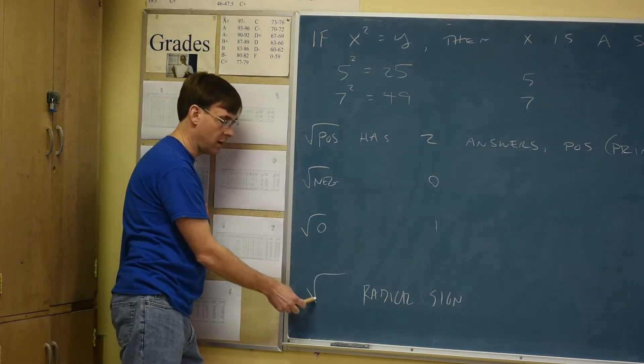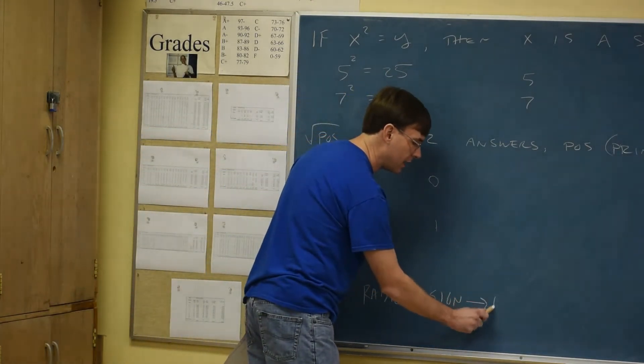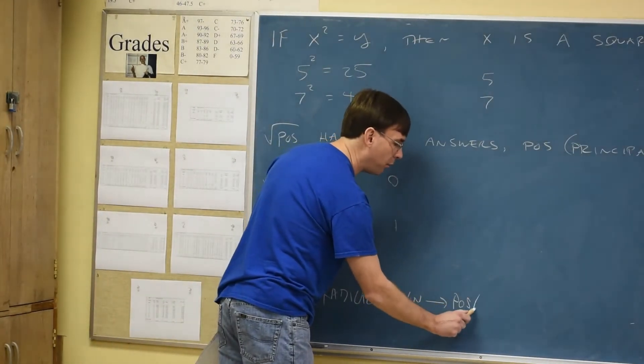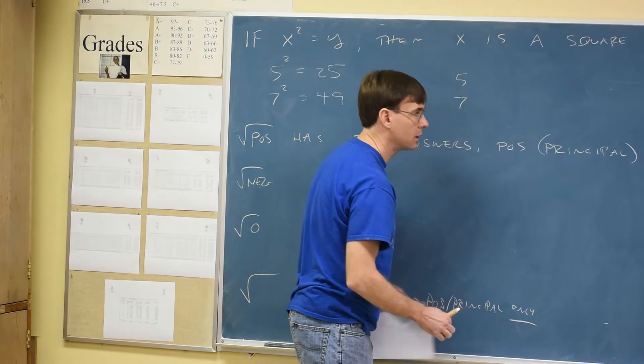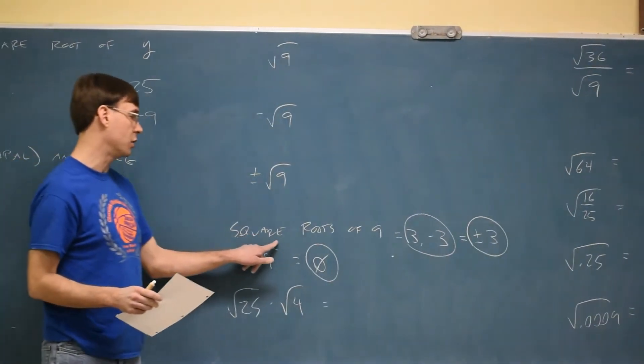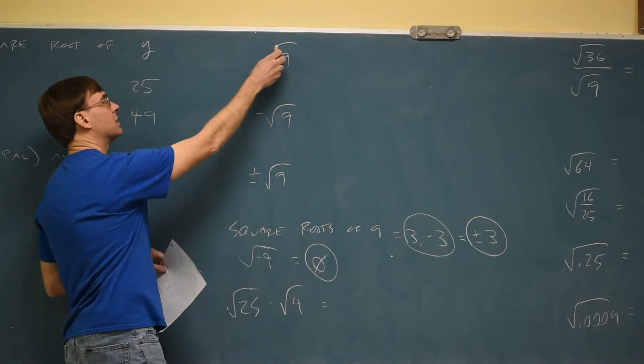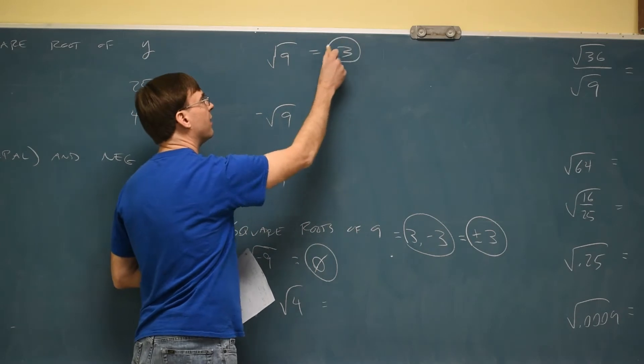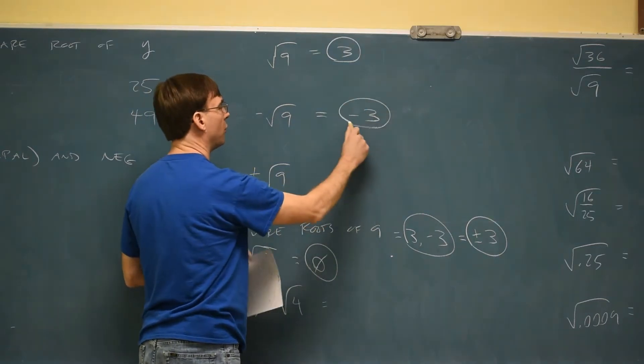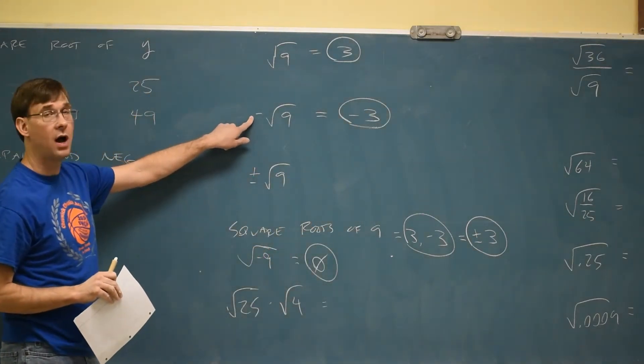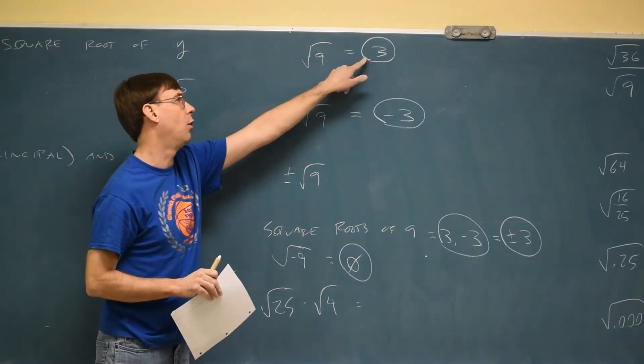This symbol you'll be hearing me in this chapter talk a good bit about is called radical sign. When the radical sign is used, they want the positive for the principal square root only. So back over here, what I said with words, what are the square roots of nine? You give both of them. But if I use this symbol with nine, you only give me the three. If I wanted to only get the negative three, I would have to put a negative in the front and that would mean only to do the negative version.